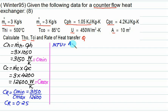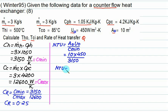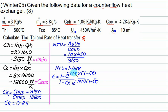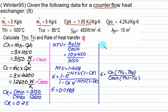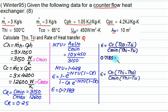Comparing Ch and Cc, Ch is Cmin and Cc is Cmax. The capacity rate ratio CR equals Cmin divided by Cmax equals 3150 divided by 12600, which equals 0.25. NTU is defined as U0 times A0 divided by Cmin. With A0 equals 10, NTU works out to 1.428. Substituting NTU equals 1.428 and CR equals 0.25 into the counter flow effectiveness formula gives effectiveness equals 0.7189.